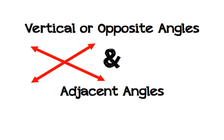In this video we are going to be talking about two different types of angles. The first are vertical or opposite angles. You can call them either vertical angles or opposite angles. And then also we'll be learning about adjacent angles.